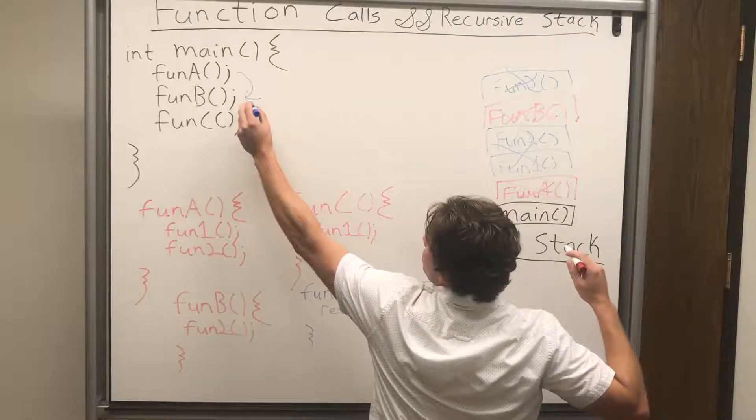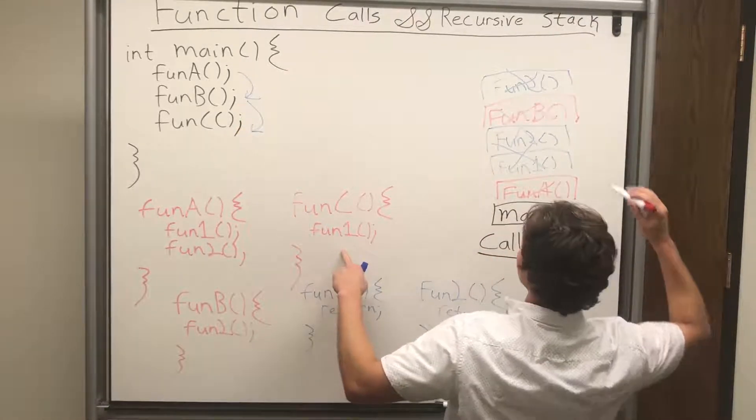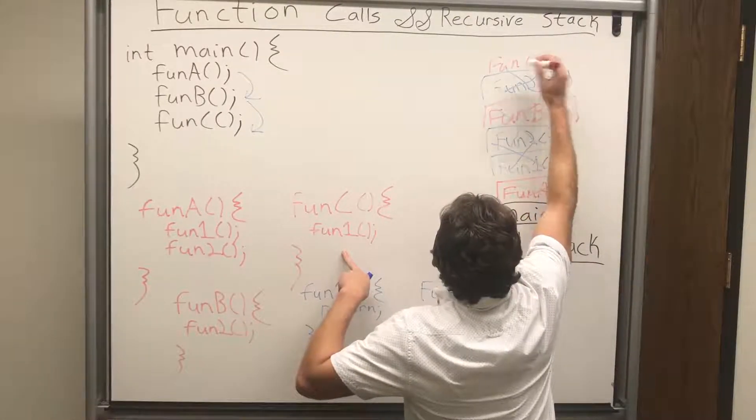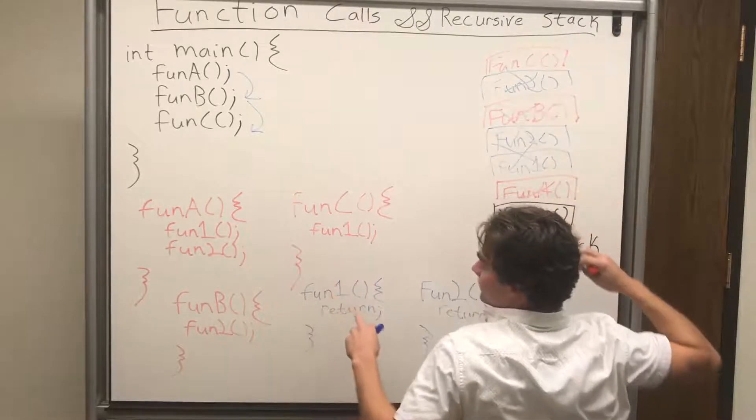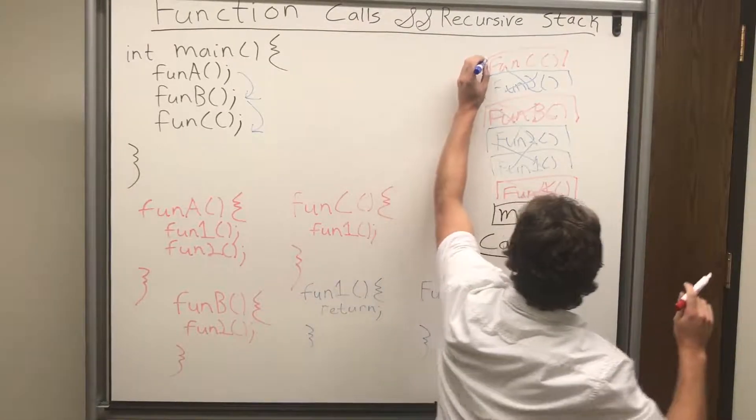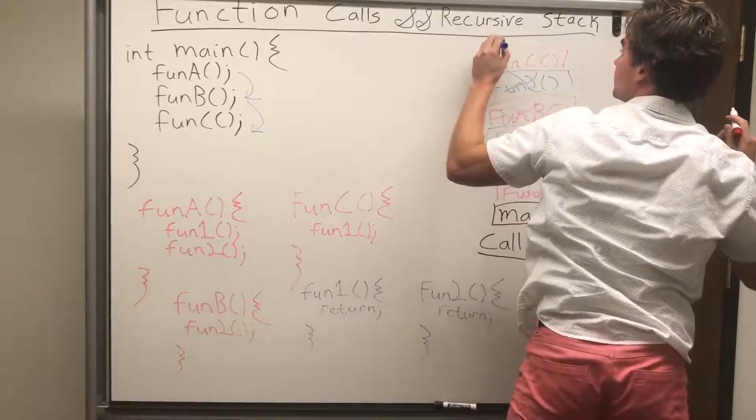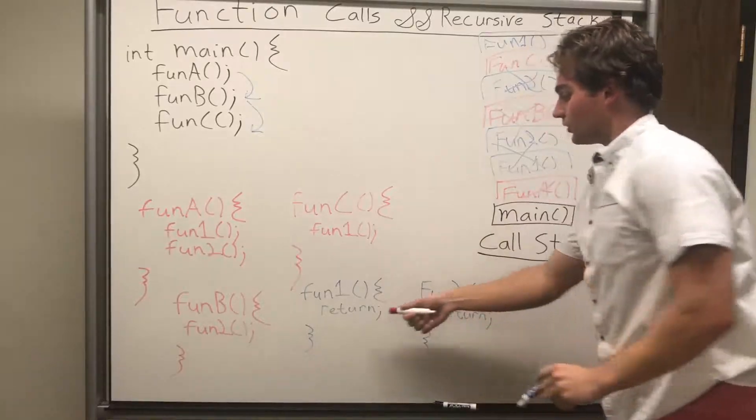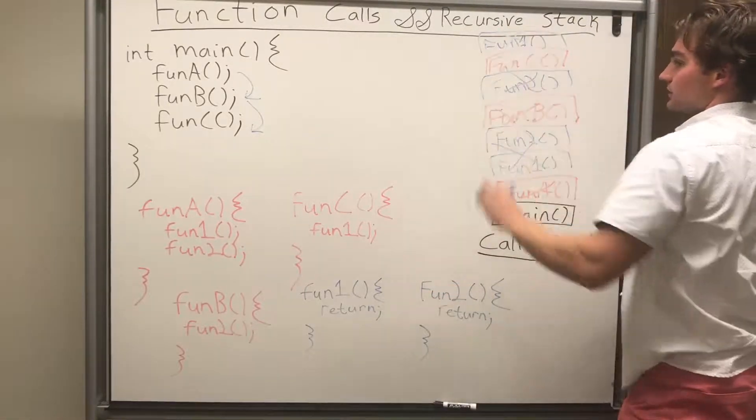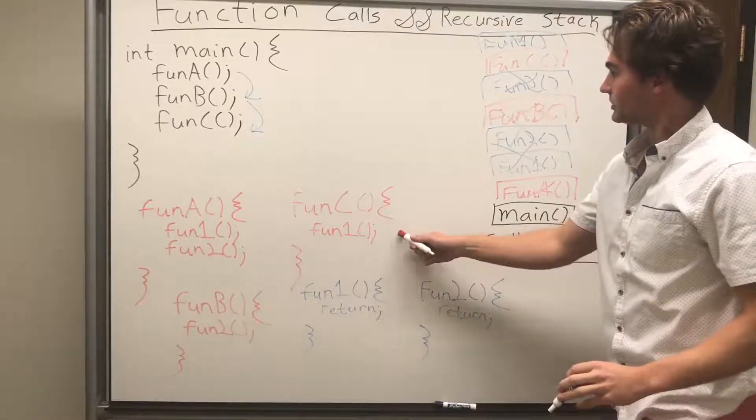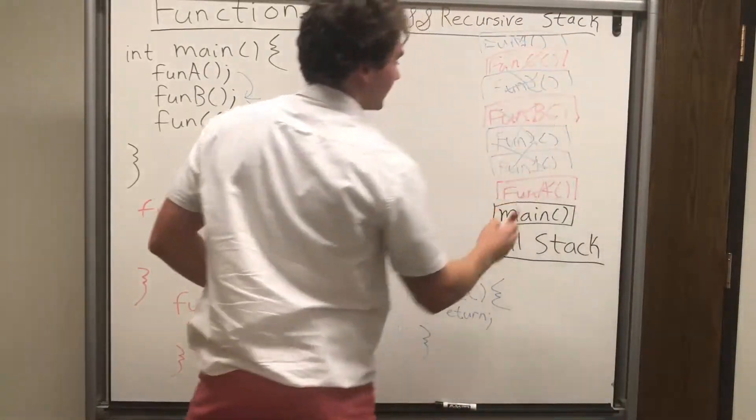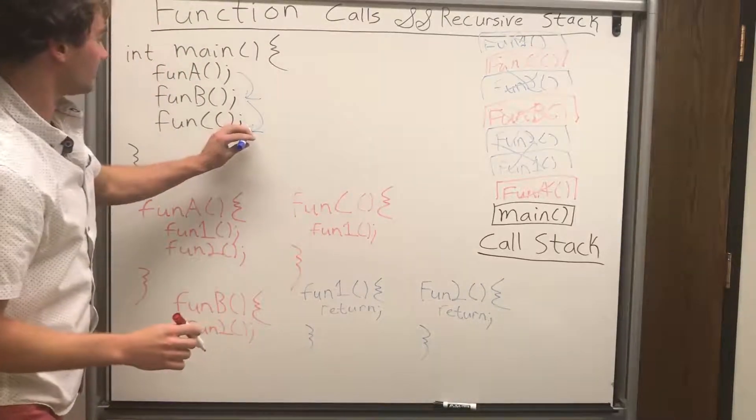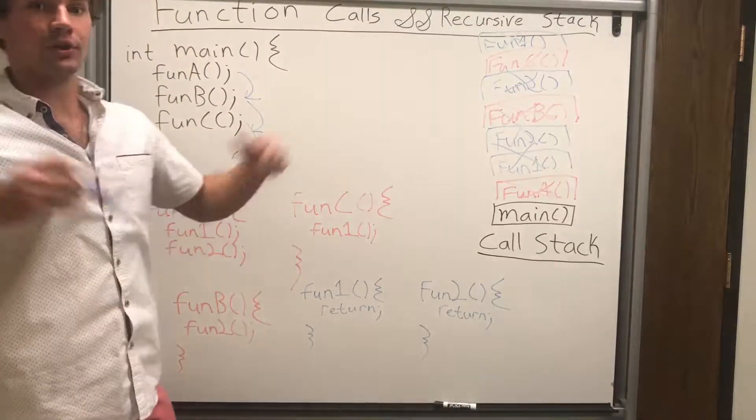Now we're done with B, we can move on to C. So we take function C, it's on top of our call stack. Great. All function C does is call function 1. So we put it up here. Super. And function 1 just returns, so we pop it off the top of the stack. Now C is done, so we can also pop C off the stack. Now all these values are done at main, and we've finished. And that's how the call stack works.